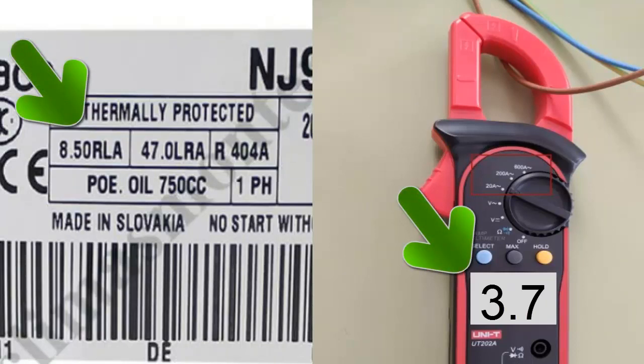Step 4. With the equipment turned on and after several minutes, compare the value measured by the amperometric clamp with the regular consumption of the unit. If the clamp's value is lower, it may indicate a lack of refrigerant.